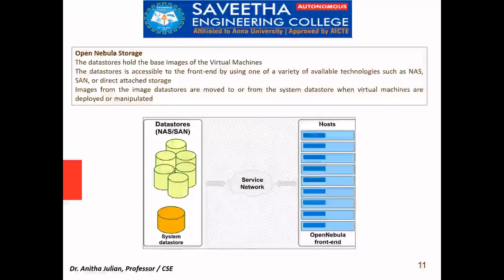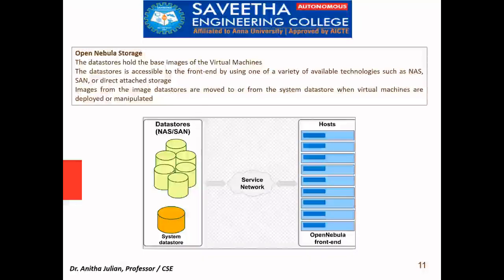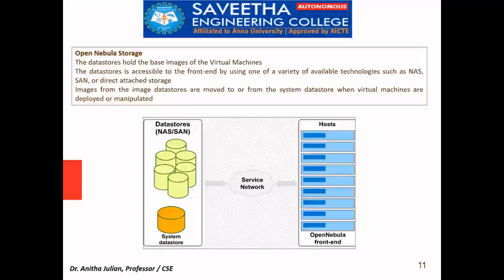Finally, there is OpenNebula storage — the data store which holds the base images of the virtual machines. The data store is a large storage unit in the data center, accessed through the service network. Depending on how many virtual machines are needed, it is divided into parts and the storage images are distributed to the worker nodes and virtual machines where they are deployed and manipulated. This completes the discussion on OpenNebula. We will continue with the other two types in the next lecture.